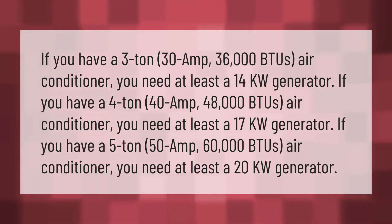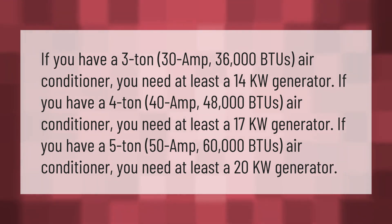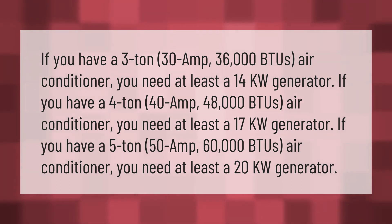If you have a 3-ton, 30-amp, 36,000 BTU air conditioner, you need at least a 14-kilowatt generator. If you have a 4-ton, 40-amp, 48,000 BTU air conditioner, you need at least a 17-kilowatt generator. If you have a 5-ton, 50-amp, 60,000 BTU air conditioner, you need at least a 20-kilowatt generator.